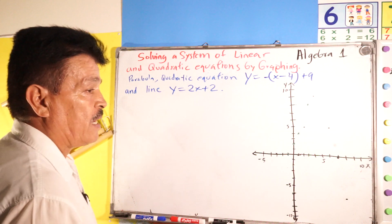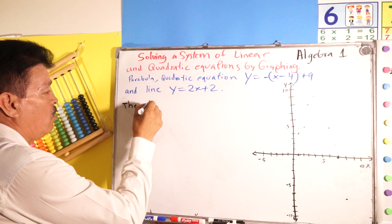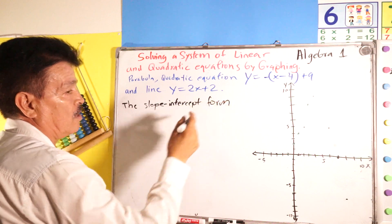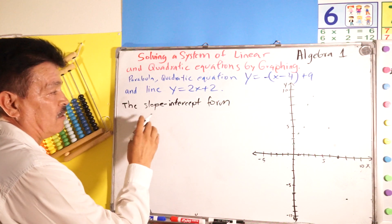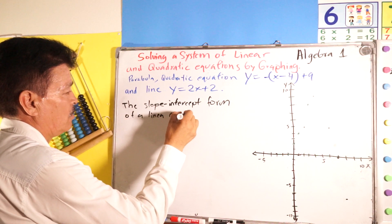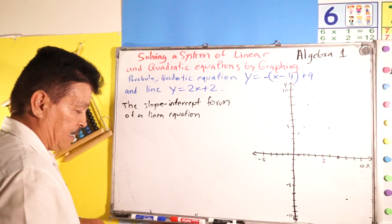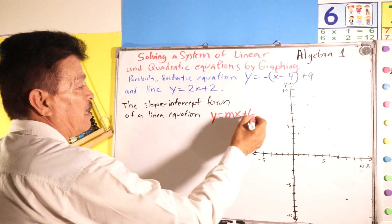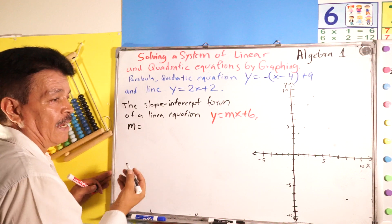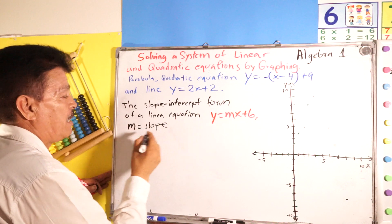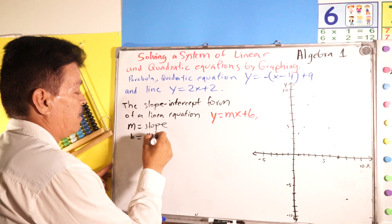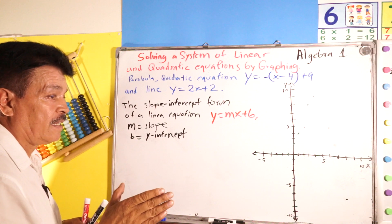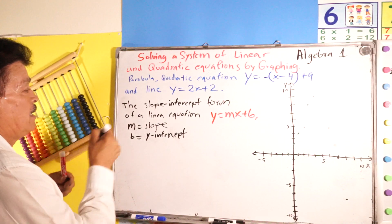Before we solve our problem, we have to remember the slope-intercept form. This is a very important concept of a linear equation. The formula is y equals mx plus b, where m is the slope and b is the y-intercept.